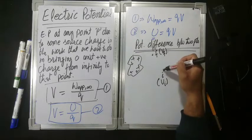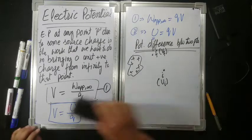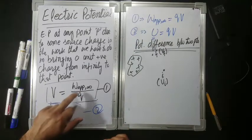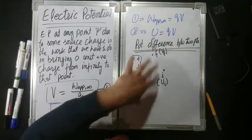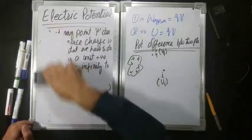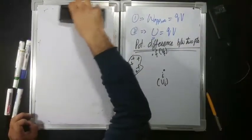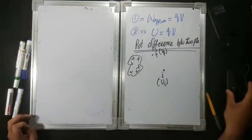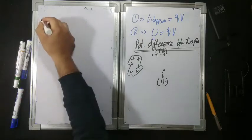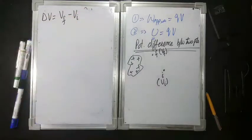Now, if you have a potential difference which is VF minus VI. Remember, potential is work done in bringing a unit positive charge from infinity. So we use this to see that potential difference between two points is equal to VF minus VI. So delta V is equal to VF minus VI. Simple — VF minus VI.